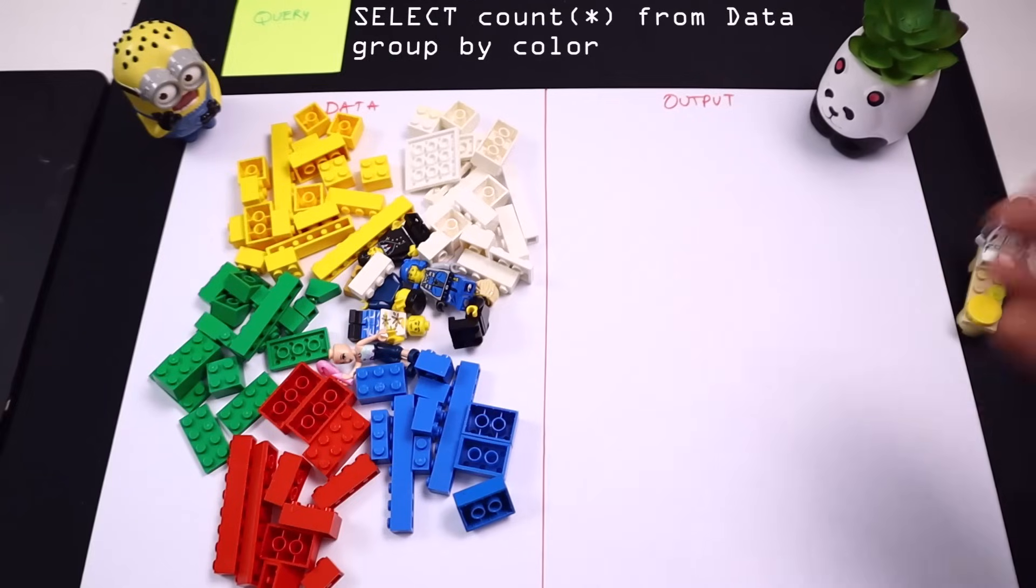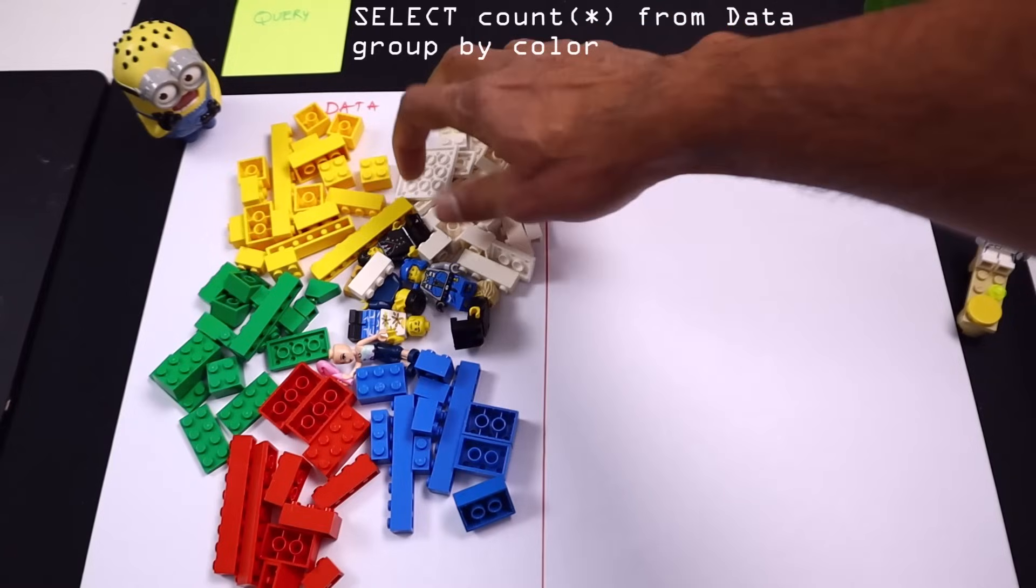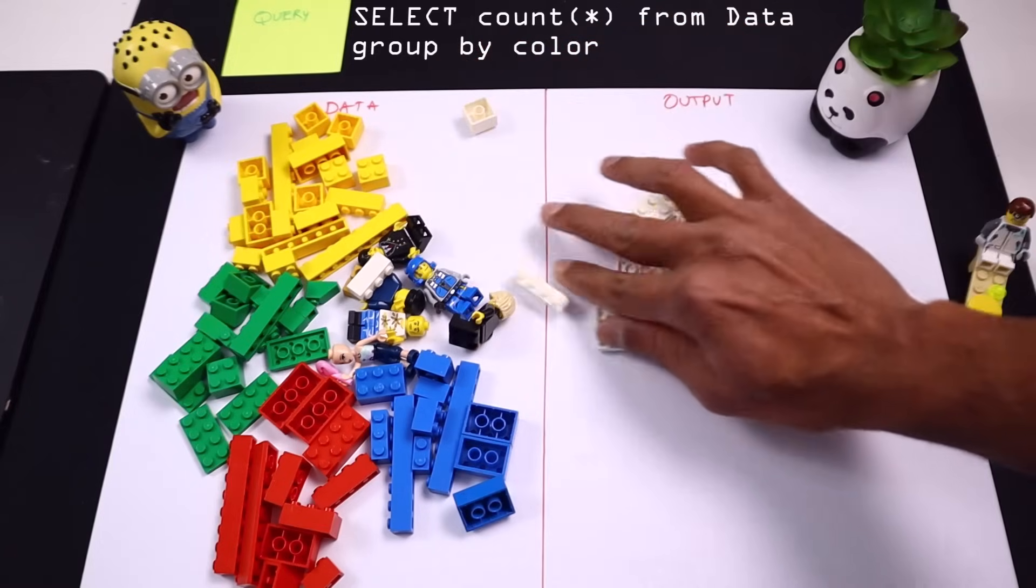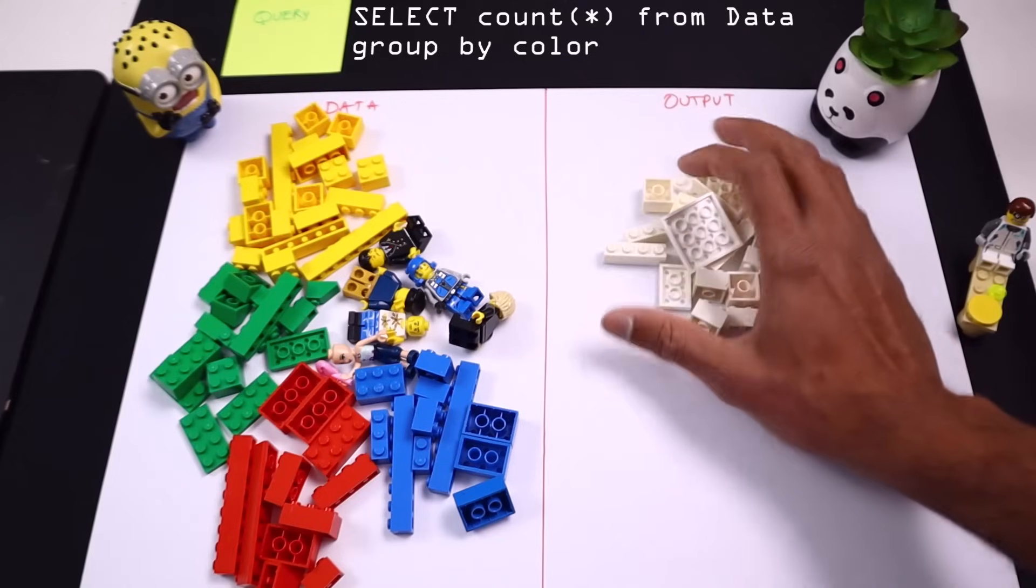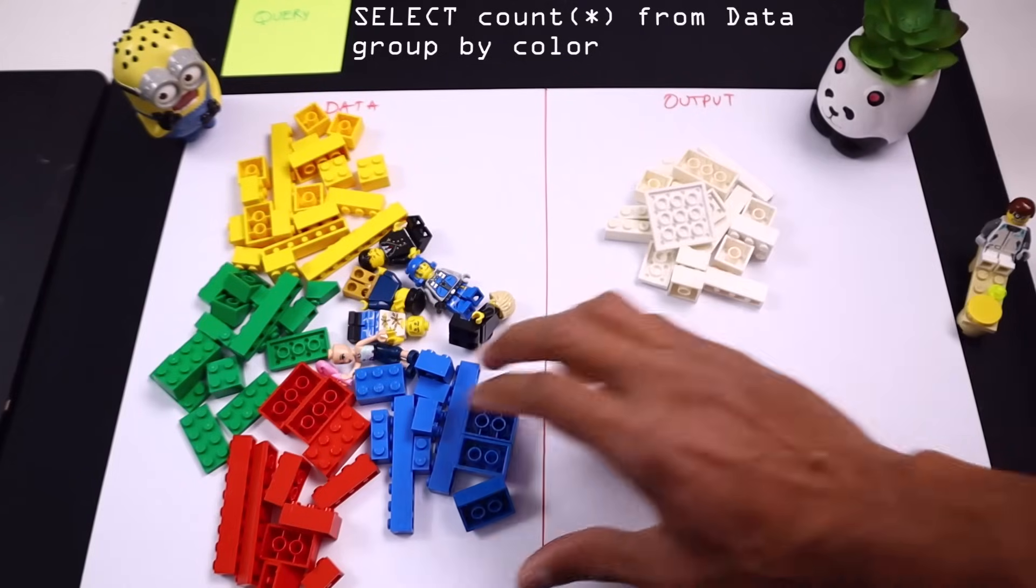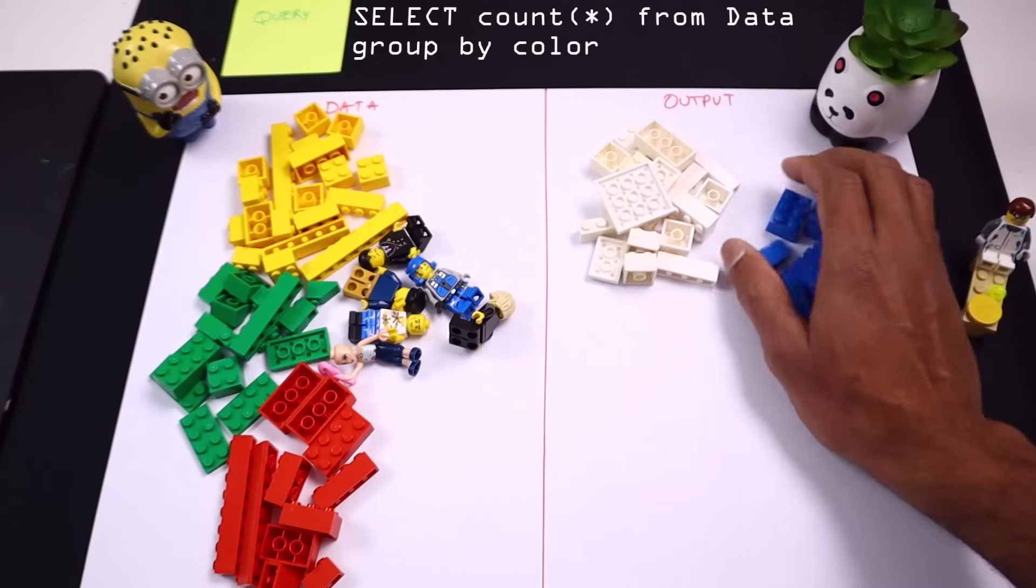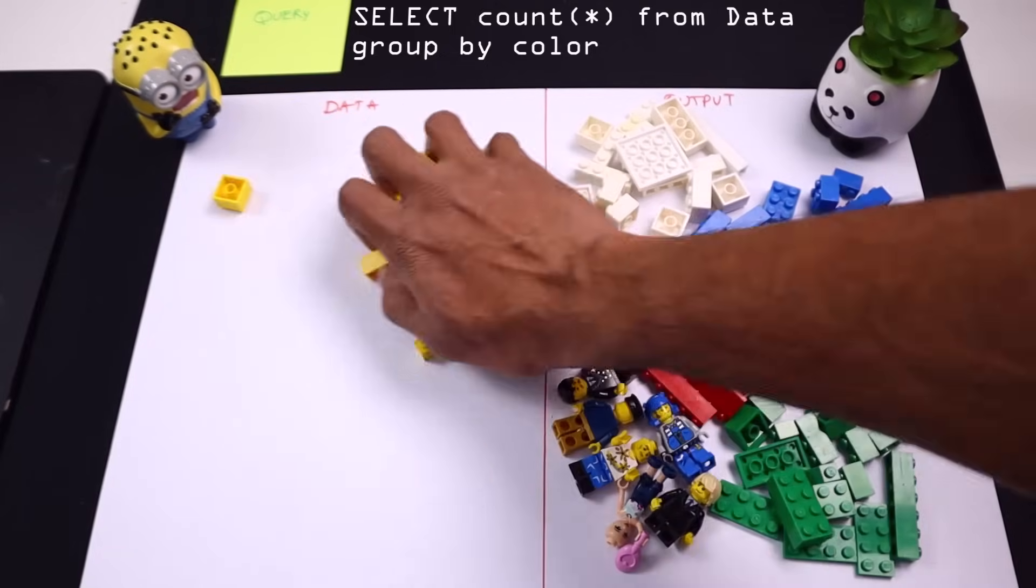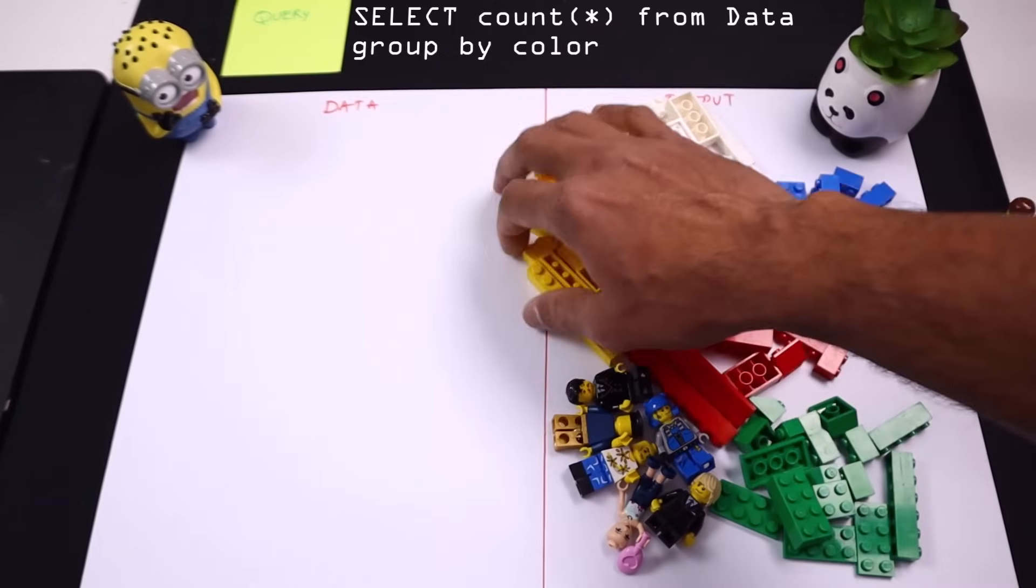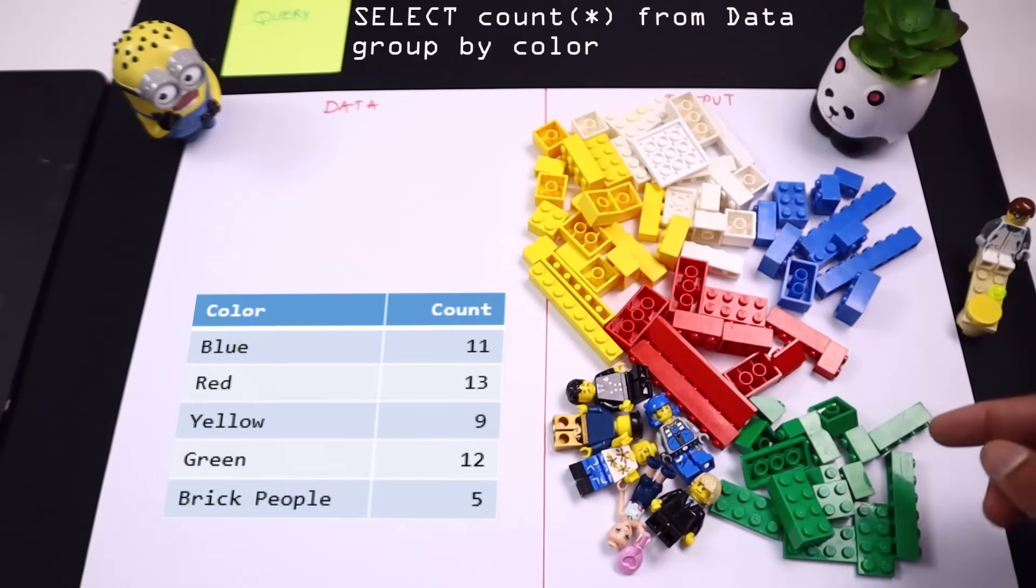For example, we can say select count of star from data group by color. What that would do is you could imagine the group by operation basically clumping the data or chunking the data by color like this. So you could imagine all the bricks of white color are one group, all the bricks of blue color one group. So once the data is grouped like that, then it will count and then provide the results in a tabular format.